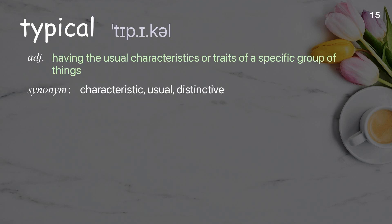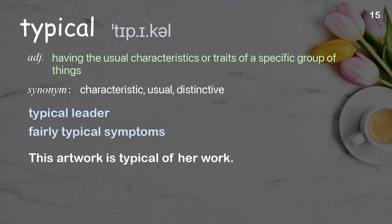Typical: having the usual characteristics or traits of a specific group of things. Examples: typical leader; fairly typical symptoms. This artwork is typical of her work.